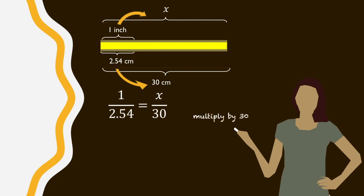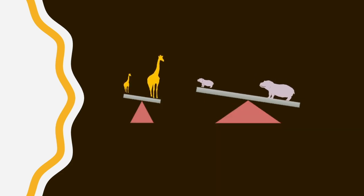So multiplying by 30, we have 1 on 2.54 times 30 is equal to x on 30 times 30, and the 30s cancel out. We then have 30 on 2.54 equals x, which is approximately 11.81 inches. So the key is just keeping track of the ratio we're preserving.